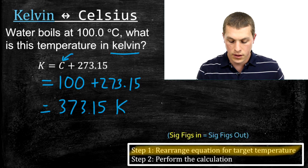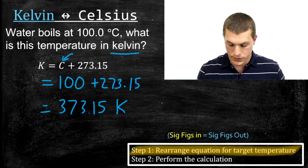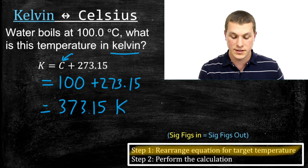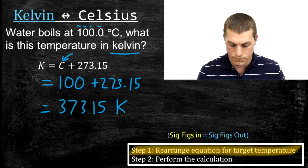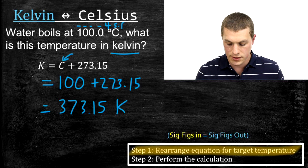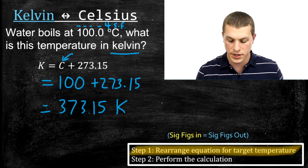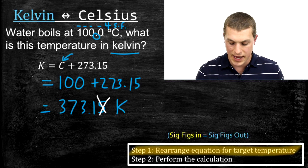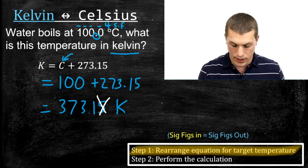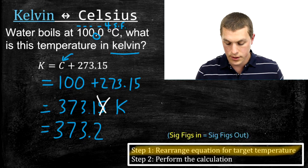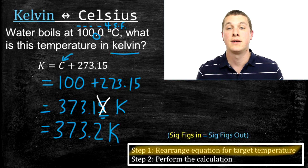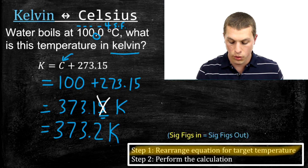For significant figures, sig figs in equals sig figs out. Our input is 100 degrees Celsius written with a decimal point, giving four sig figs. So we round 373.15 to four sig figs: we drop the 5 and round up since the digit behind it is 5, giving us 373.2 K. Water boils at 373.2 Kelvin.